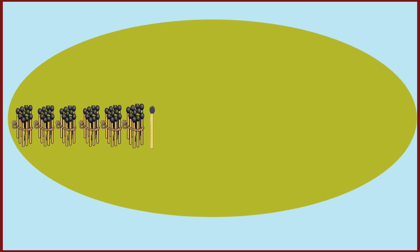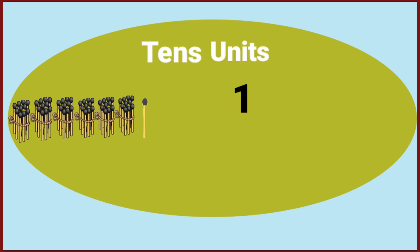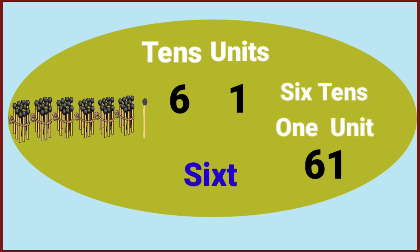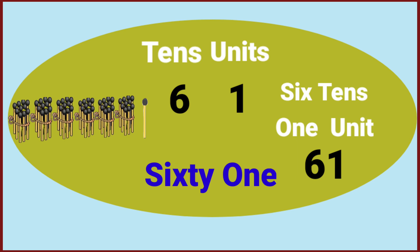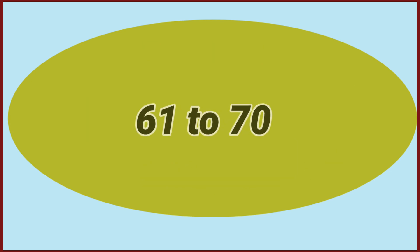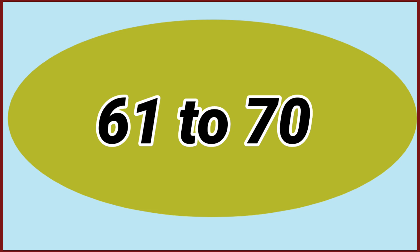Six bundles and one single matchstick means six tens and one unit. Six tens and one unit makes sixty-one. Sixty-one to seventy.